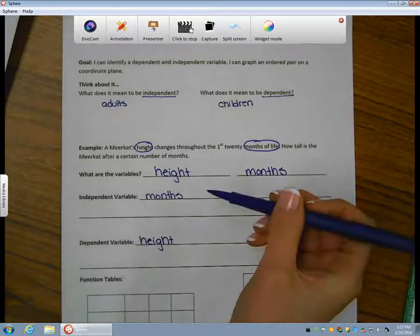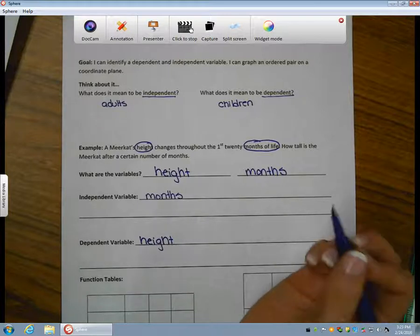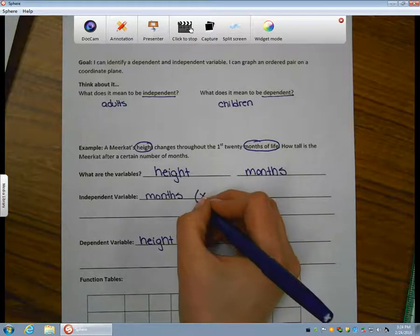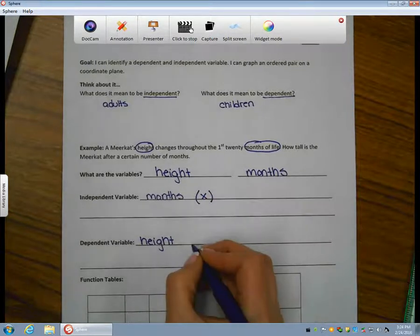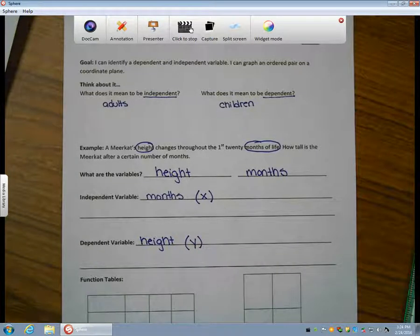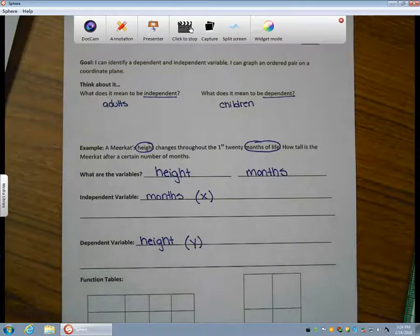You've learned that we can represent variables using different letters. Typically, you'll see your independent variable be called x and your dependent variable be called y. But of course, we could use any letter to represent variables. Using x and y are going to help us when we try to graph today.